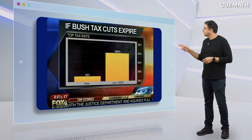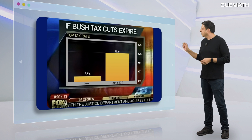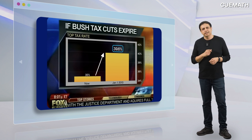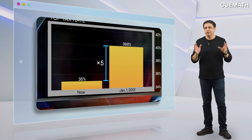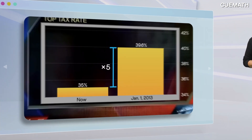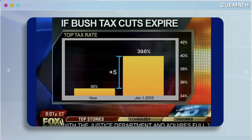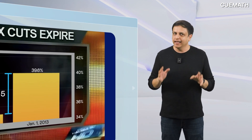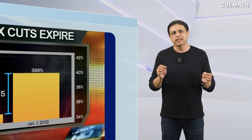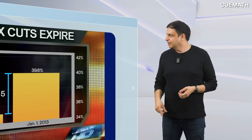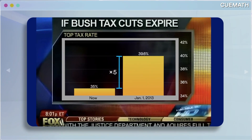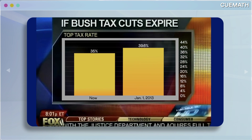This graph suggests that taxes in America would skyrocket if the old tax rates returned — by almost 5 times. Really? The number 39.6% is quite close to 35% and clearly not 5 times. The gap is exaggerated. The graph starts from 34 and not 0. If we start at 0, the gap won't seem so huge.